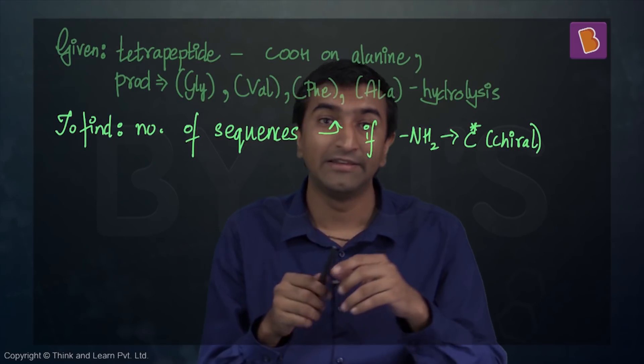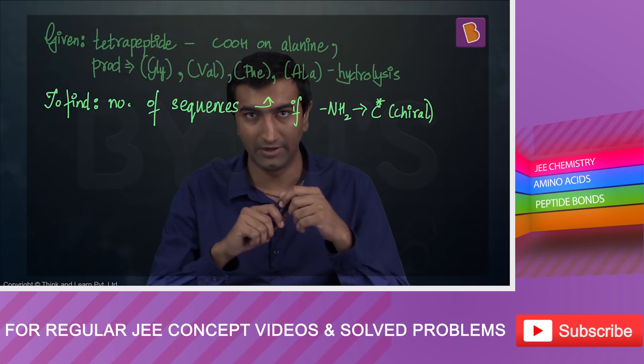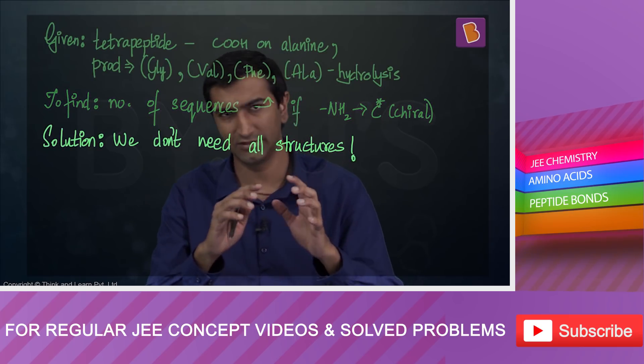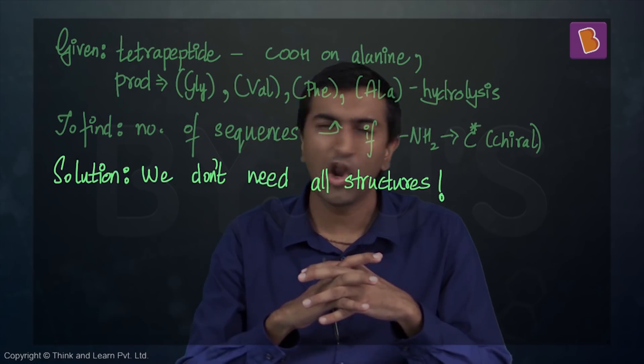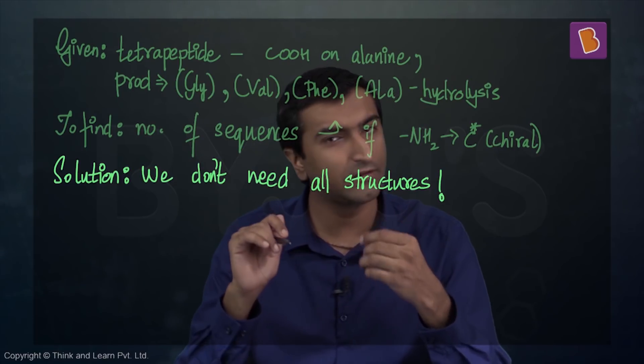The other condition is that at the other end, the NH2 group is attached to a chiral carbon. These are your two conditions. Let me write them down, but before that, do I need the structures of all these four? Not entirely. I can do away with that idea. Let's use these two conditions and see if we can eliminate stuff and still arrive at the answer.